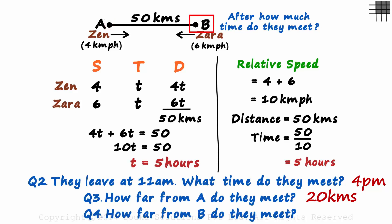And how far from B do they meet? It would be 6 times T or 30 kilometers. Remember, for relative speed problems, the time taken by the parties to meet would be equal to the distance between them divided by the relative speed.